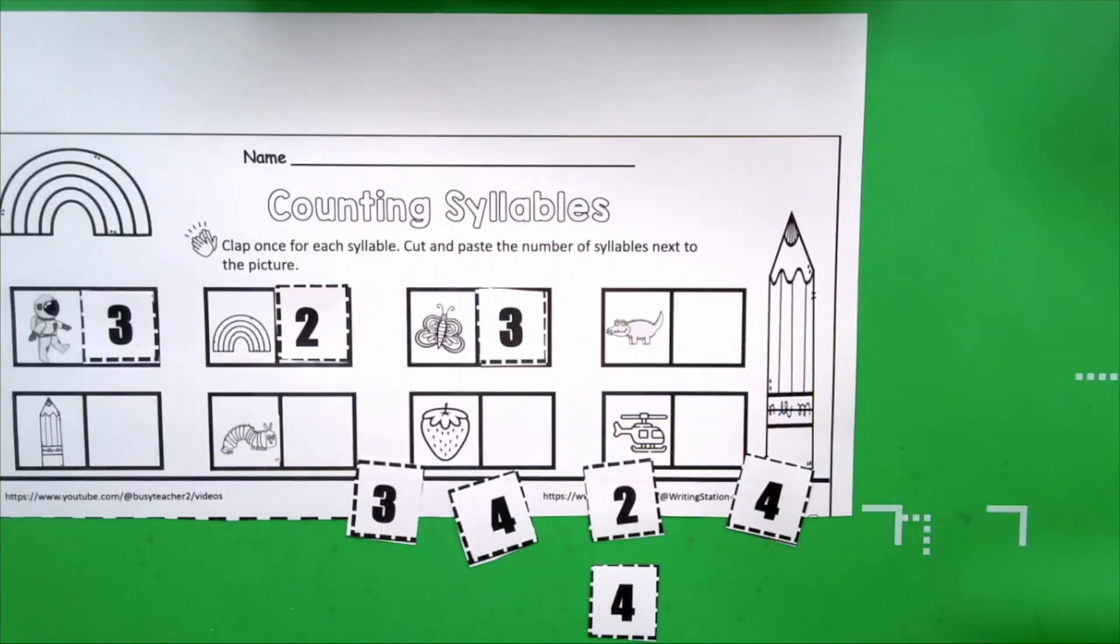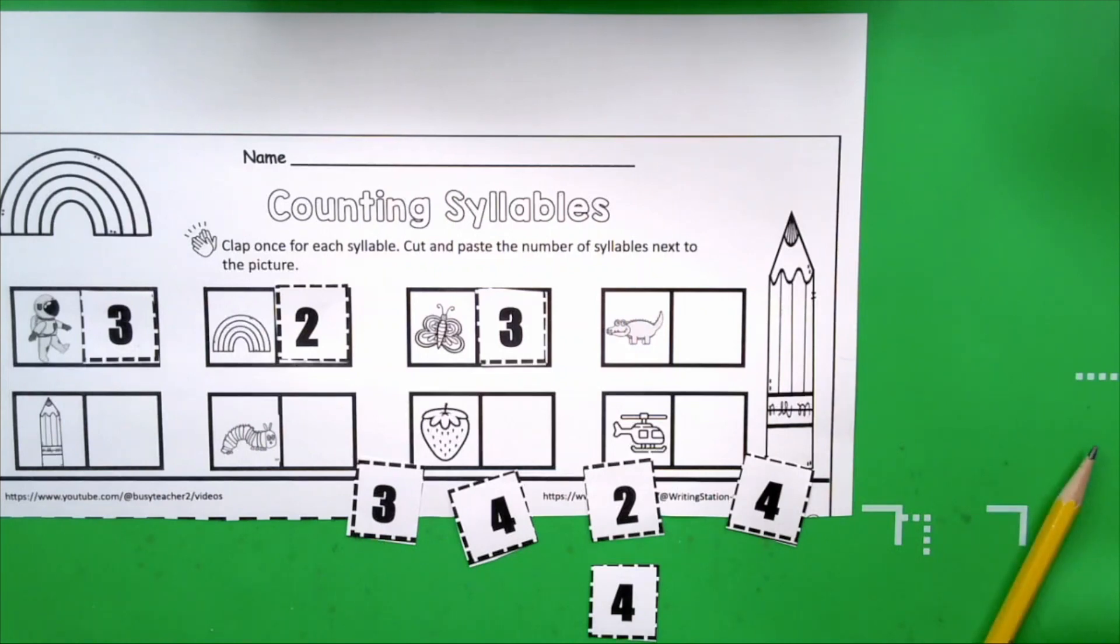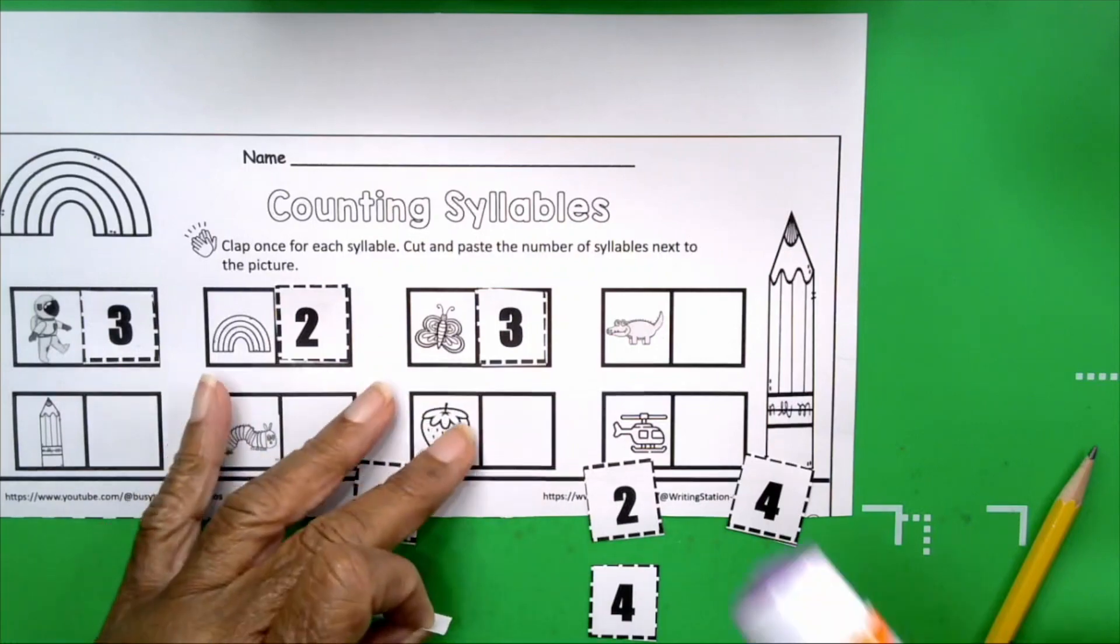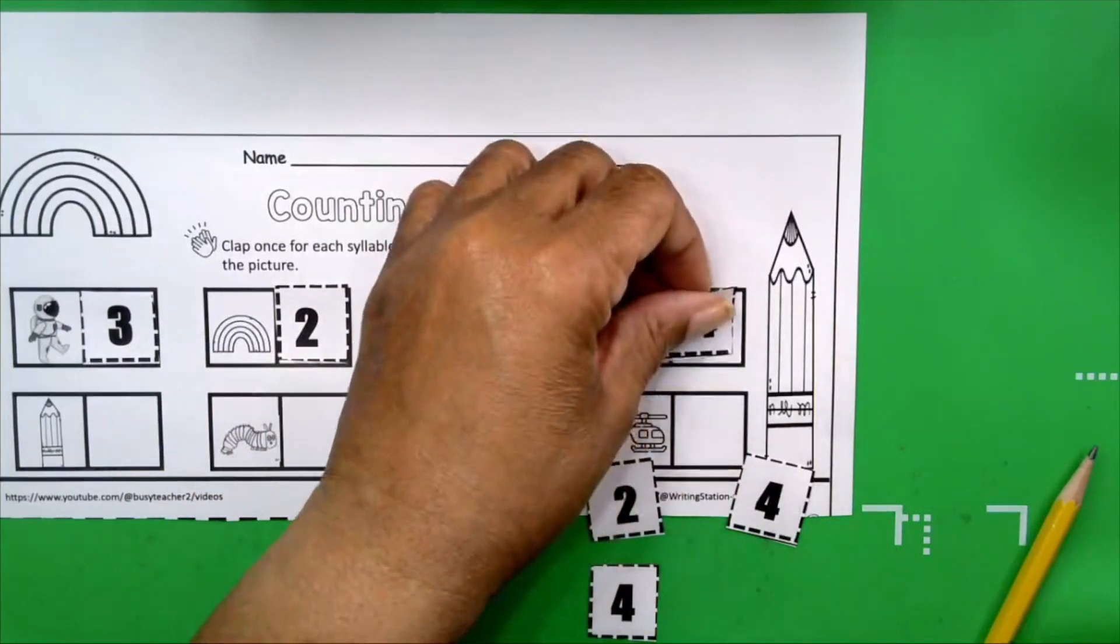Boys and girls, you're doing just great. Excellent. Okay. Alligator. Get your hands ready. Alligator. Let's do it one more time. Alligator. How many claps did you make? Four. How many syllables are in the word alligator? Four. Very good. Four syllables. This is the first time we've had to clap four syllables. You did great.